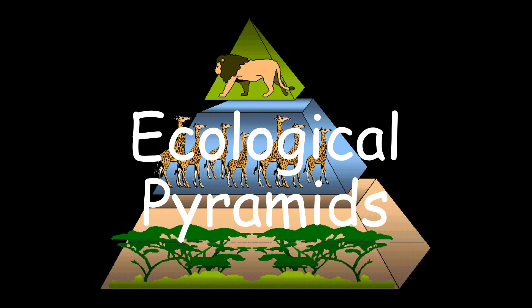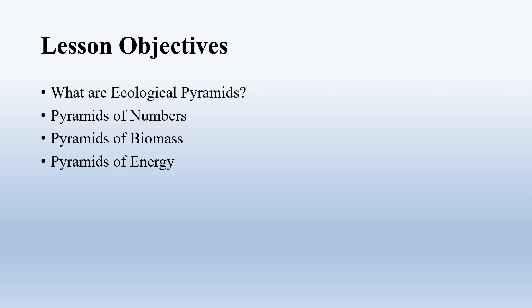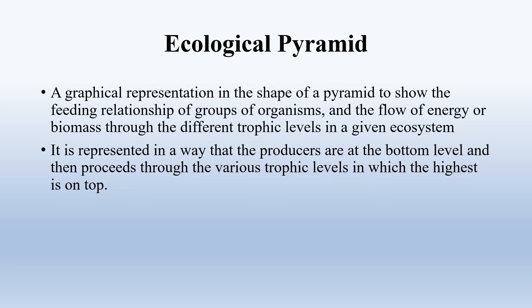Hello everyone, this video talks about the ecological pyramids, their types, and their variations in an ecosystem. In this lesson we learn about what ecological pyramids are, and the types of pyramids: pyramid of numbers, pyramid of biomass, and finally the pyramid of energy.